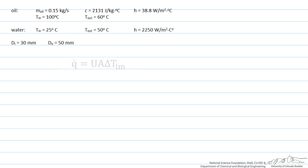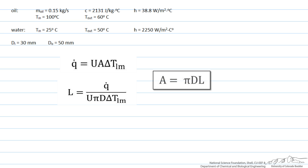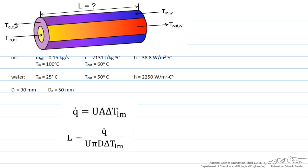We're still going to use our governing equation, q equals U times A times delta T log mean, as we did with parallel flow, and again we're going to rewrite it in terms of our length. If we look at our properties and our equation...